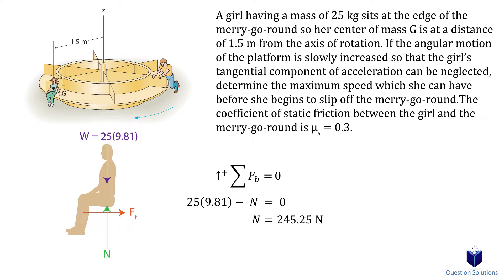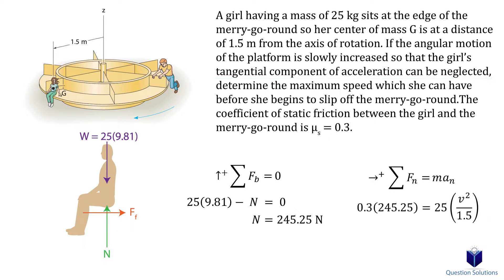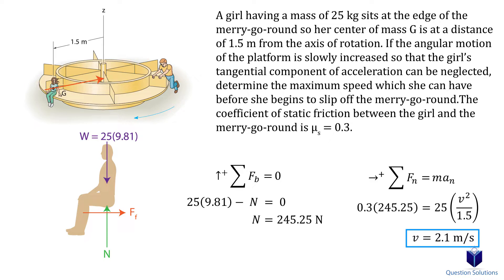To find the answer, we only need to consider the normal axis, since the question says the tangential component of acceleration can be neglected. Writing our equation of motion, we only have the frictional force on the left side — it points towards the center of the merry-go-round. On the other side, we have mass multiplied by normal acceleration, which is velocity squared divided by the radius of 1.5 meters. Solving for velocity gives us our answer.